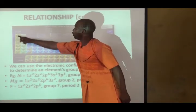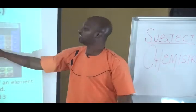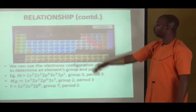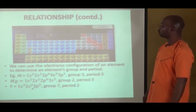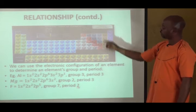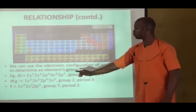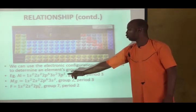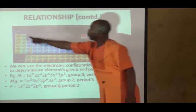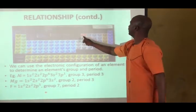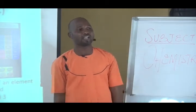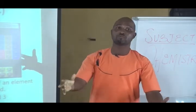Let us also look at fluorine. Fluorine is 1s2, 2s2, and 2p5. The outermost shell is 2, that is 2s and 2p, so fluorine is in period 2. The number of electrons in the outermost shell: 2s has 2 electrons and 2p has 5 electrons, giving 2 + 5 = 7. So fluorine is in group 7, period 2. In an examination, once you can write the electronic configuration, finding the group and period is as easy as A, B, C.